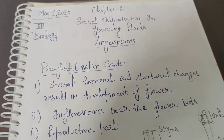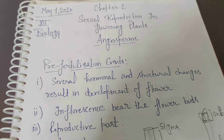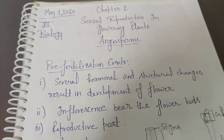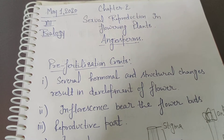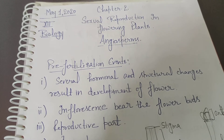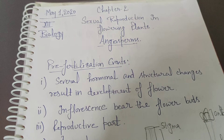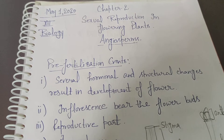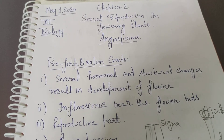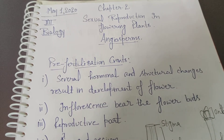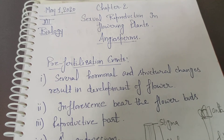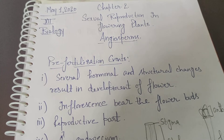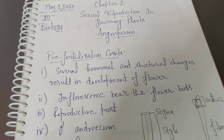Good morning class. Today our lecture is Class 12 Biology, Chapter 2, on the topic sexual reproduction in flowering plants. If you remember the divisions of kingdom Plantae, under that we have discussed Thallophyta, Bryophyta, Angiosperms, and Gymnosperms. Gymnosperms are the flowering plants, and Angiosperms is the topic for today's lecture. We will be discussing the structure of a flower and the events that take place during sexual reproduction.